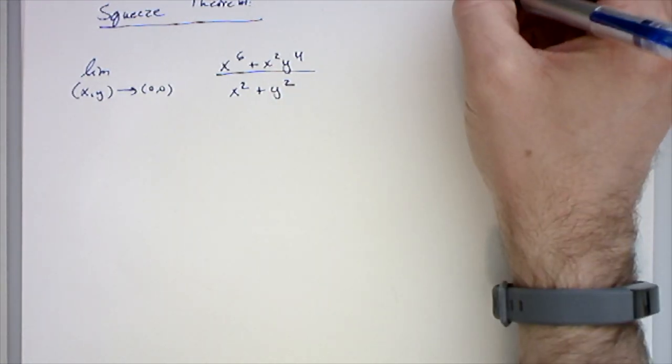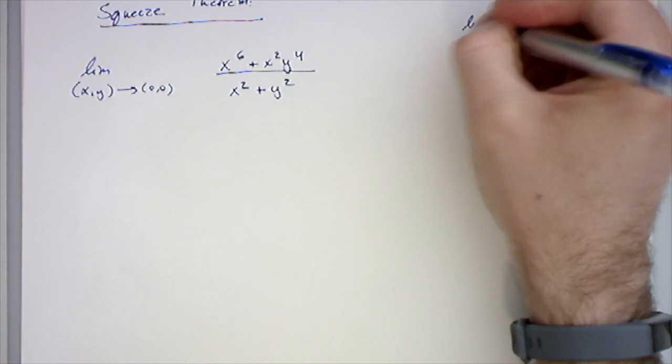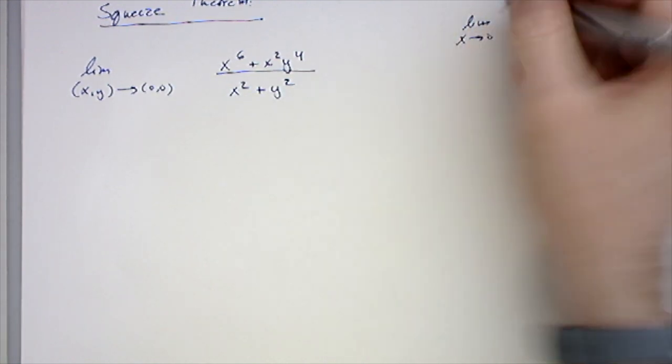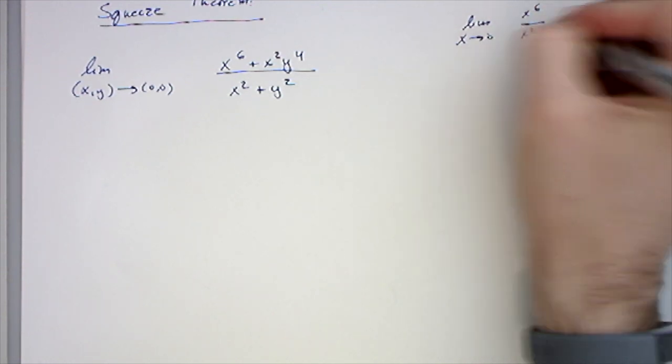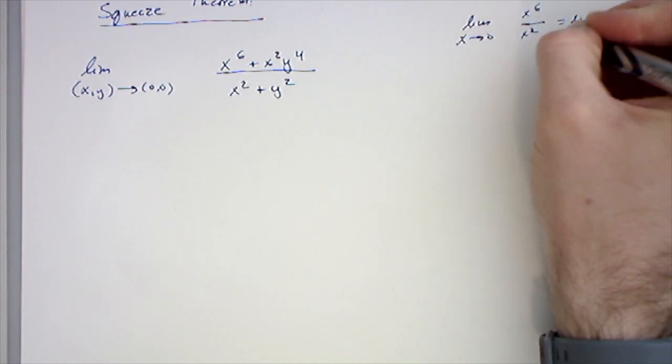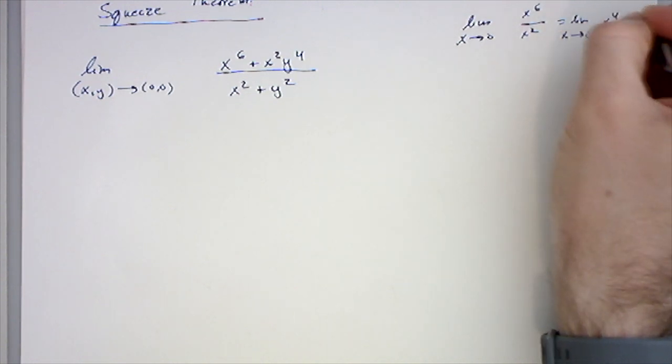If I try y equal to 0, I get the limit as x goes to 0 of x to the 6 plus 0 over x squared, that becomes the limit as x goes to 0 of x to the 4th, which is just 0.